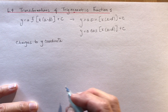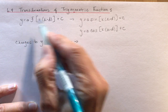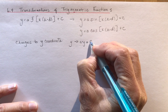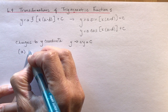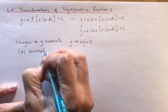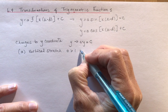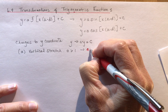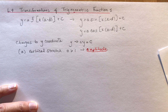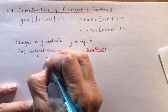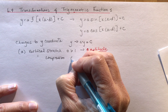Let's talk about changes to the y-coordinate first — it's the easiest one. In a mapping rule, y gets multiplied by a and then we add c, so y goes to ay + c. The a value means vertical stretch or compression. It's a vertical stretch if a is greater than 1. For trig functions, the a value is the amplitude. If a is between 0 and 1, you have a vertical compression.